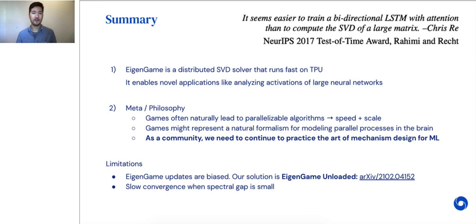We've identified some limitations of eigengame. Firstly, its updates are biased and so are sensitive to batch size. We've addressed this in follow-up work titled Eigengame Unloaded, which is available on arXiv. Another issue concerns how convergence to the actual eigenvectors slows when the gap between successive eigenvalues is small, although this doesn't affect subspace convergence. This is an area that we are actively working on.